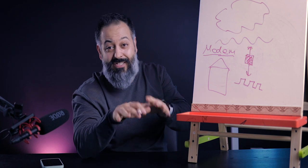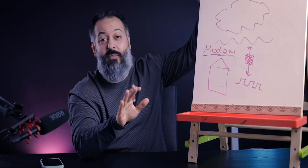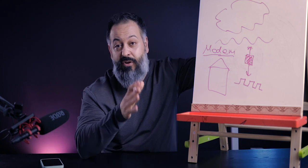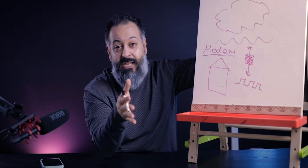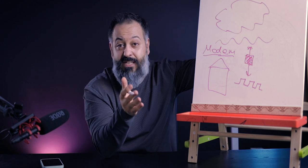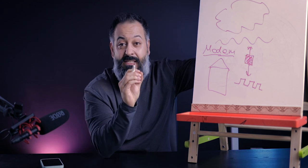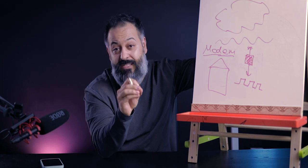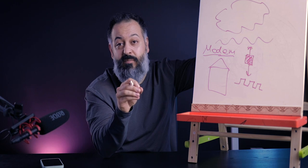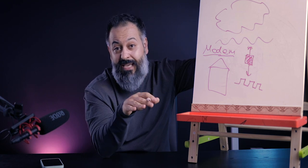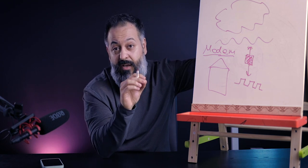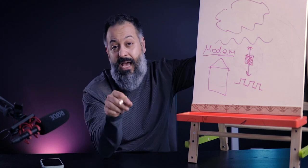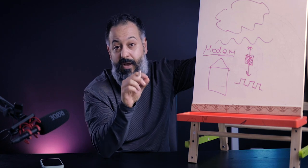A modem will modulate the digital signal to analog so you can send it to the internet, and demodulate the analog signal coming from the internet back to digital for your home network. That's where the name modem comes from — modulator demodulator. When you rent equipment from your internet service provider, that unit you rent for $11–$16 a month is typically a combo modem and Wi-Fi router in one device.